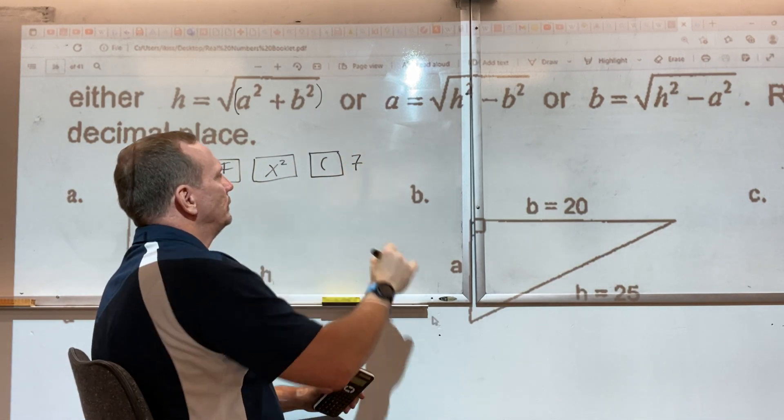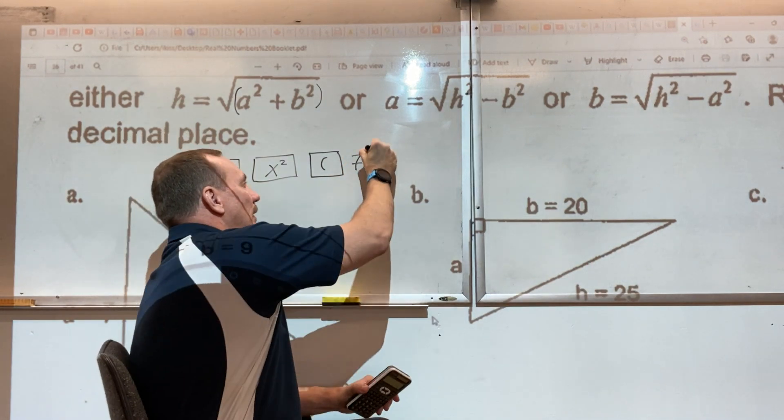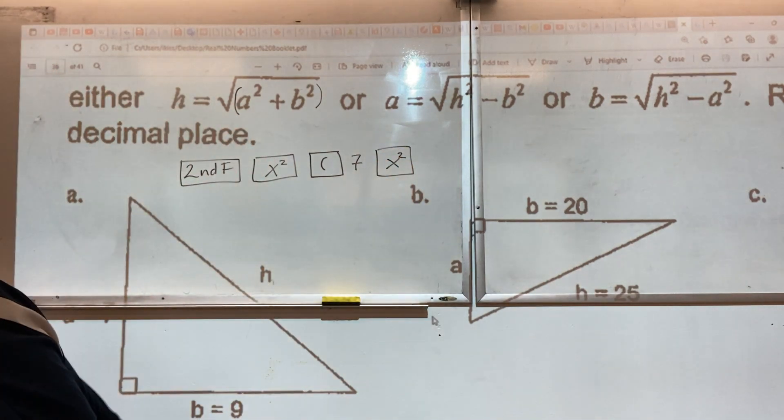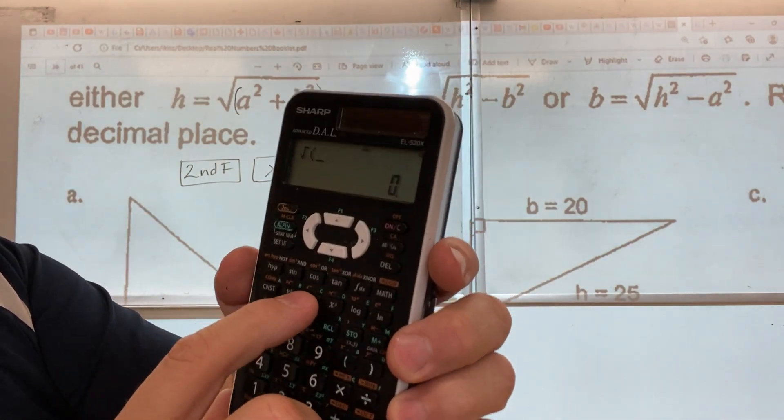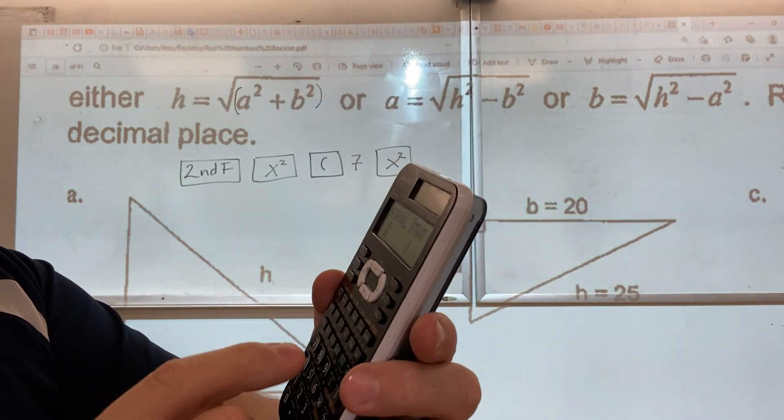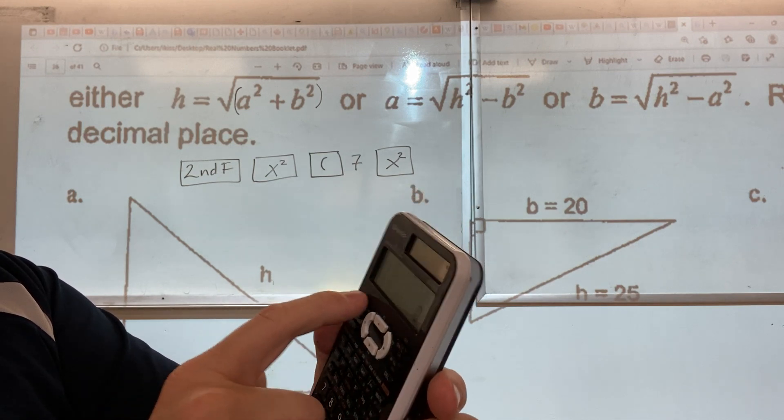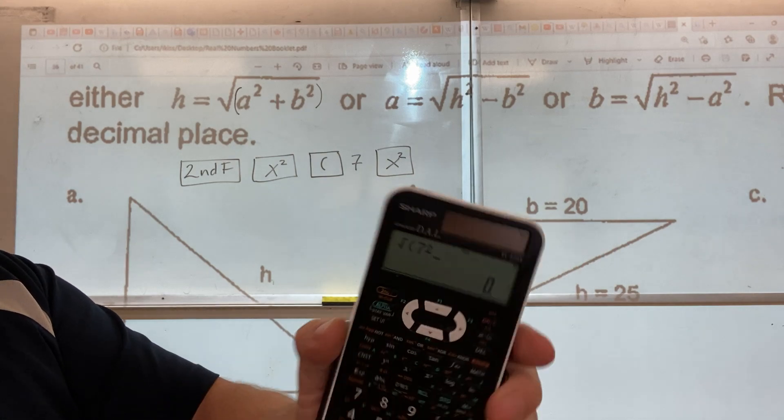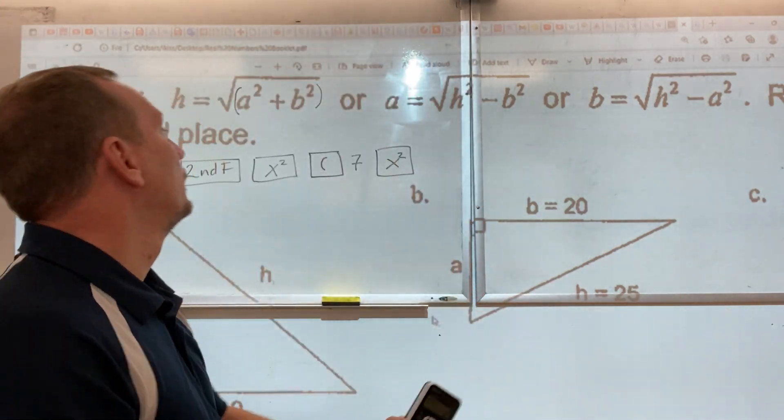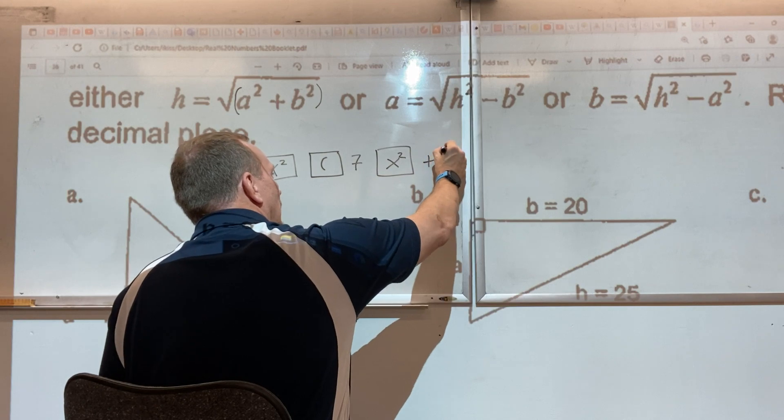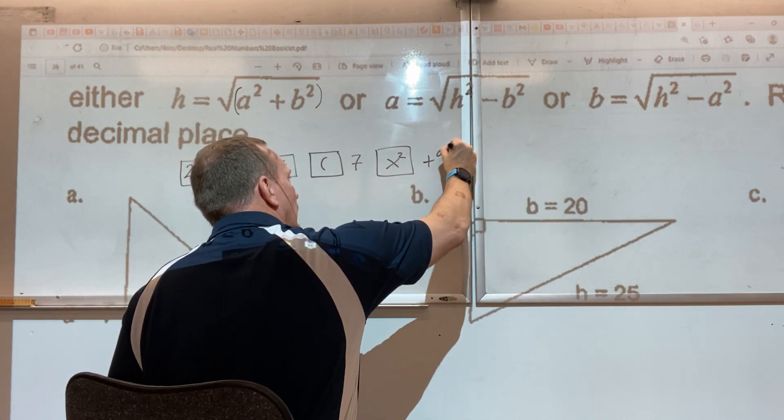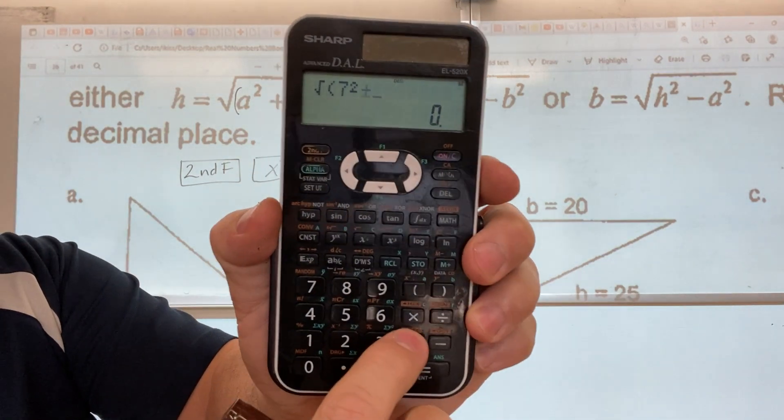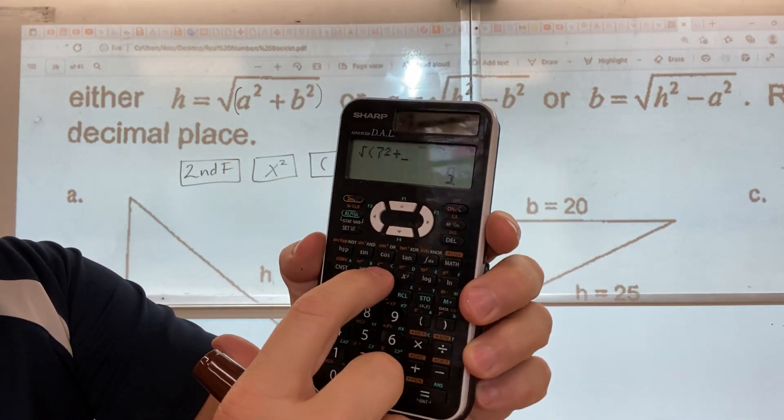Open bracket, seven, just a seven. Next button is this one for real without the second function. Oops, forgot, start again. Second function, that one, open bracket, seven, squared. There, that's how we're looking so far. Plus, nine, squared. So I'm going plus nine squared.